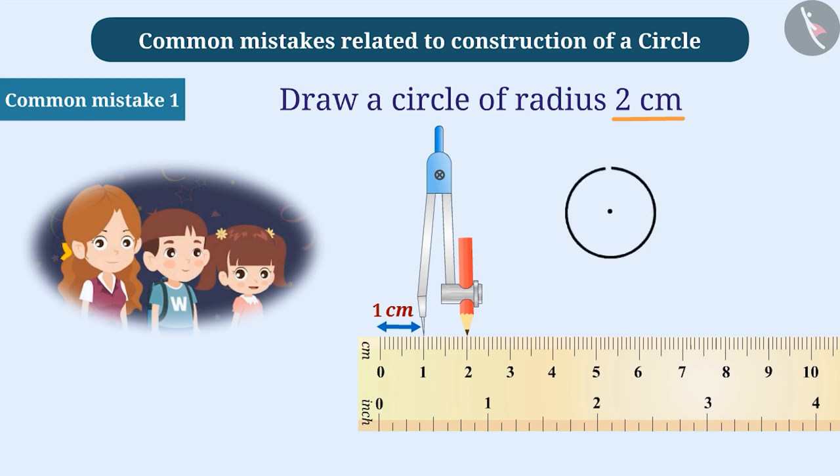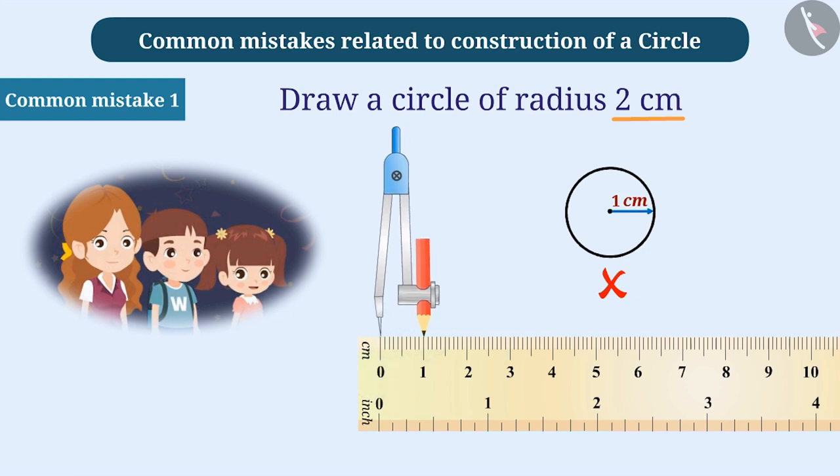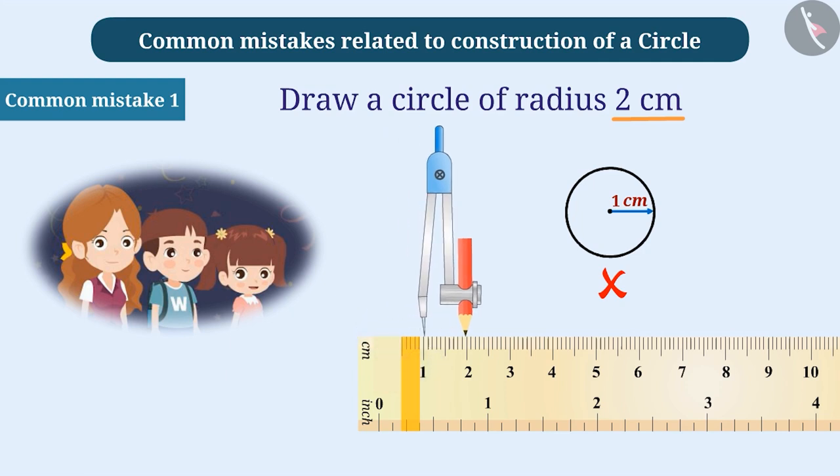Students construct the circle using this measurement, due to which the circle formed is inaccurate. Keep in mind that while measuring in the compass, it is necessary to keep the pointed end at 0. If the ruler is broken or the 0 sign is not visible properly, then we can place the pointed end on another symbol, but then it is important that the distance from this symbol is measured properly.